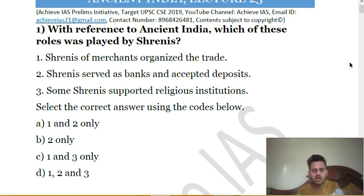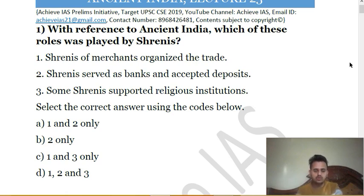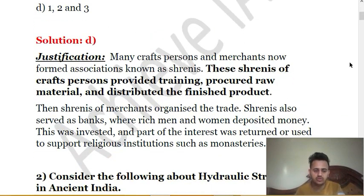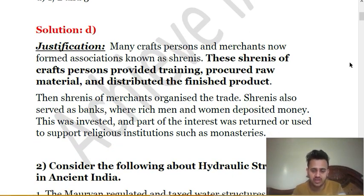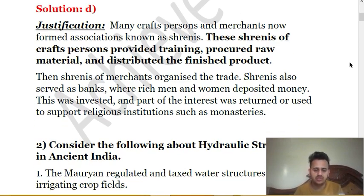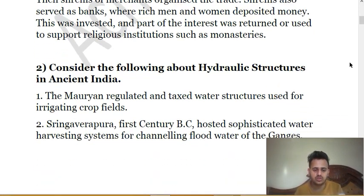All of these were roles played by Shrenies in ancient India. They were organizations of merchants that procured raw material and distributed finished products. They also served as banks for rich people who deposited money there, and they supported religious institutions like monasteries. So the answer is D. These Shrenies of crafts also provided training, procured raw material, and distributed finished products. Money deposited was invested, and part of the interest was used to support religious institutions such as monasteries.